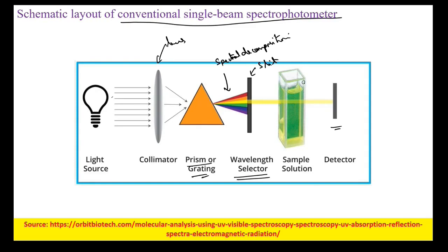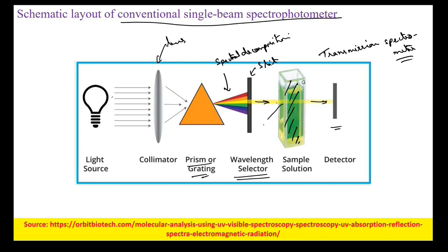This is a transmission spectrophotometer because the light gains entry into the sample and then comes out and falls onto the detector. In reflective spectrometers, the light falls onto the sample which is opaque, and from there it is reflected onto a detector.